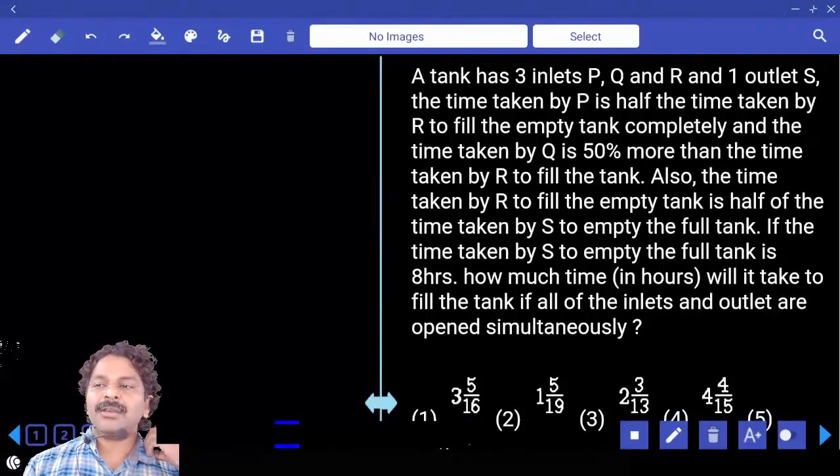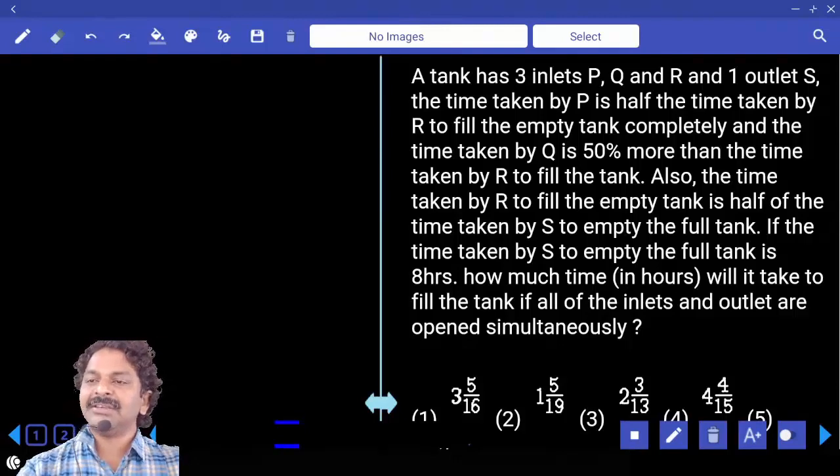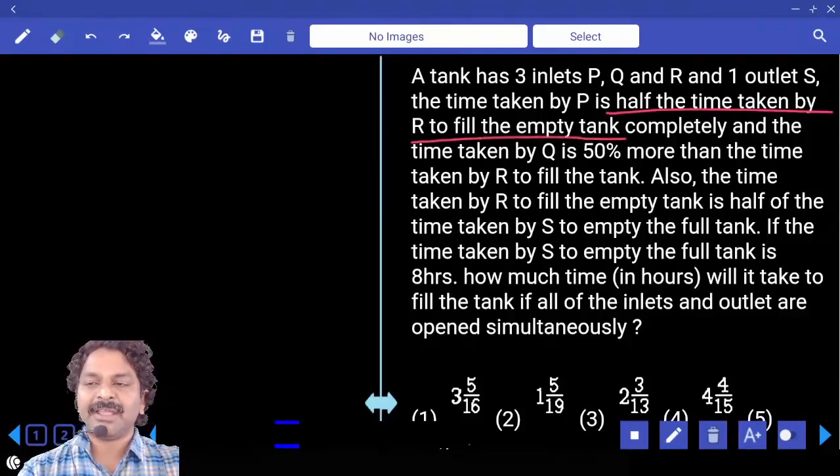A tank has 3 inlets P, Q, and R and 1 outlet S. The time taken by P is half the time taken by R to fill the empty tank completely.